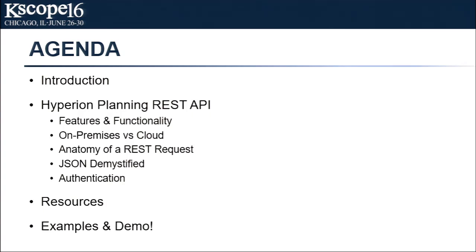Notice that I didn't say the PBCS REST API. We're going to be showing you a demo today that uses on-prem, but most everything — in fact, everything I'm going to show you and more — will work with PBCS. We're going to go through a brief introduction, talk about the API itself, what it can do and what it can't do, differences between on-prem and cloud, some nuances, resources, and then get straight to a live demo. I am running Planning on my laptop, so we'll be working with on-prem planning.